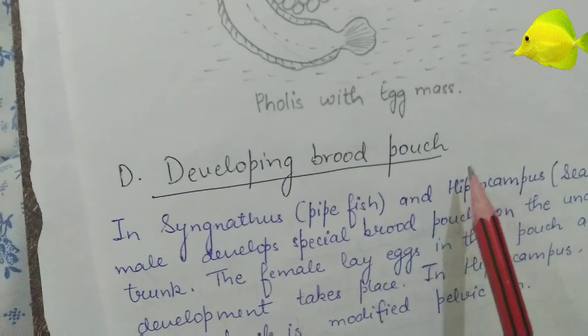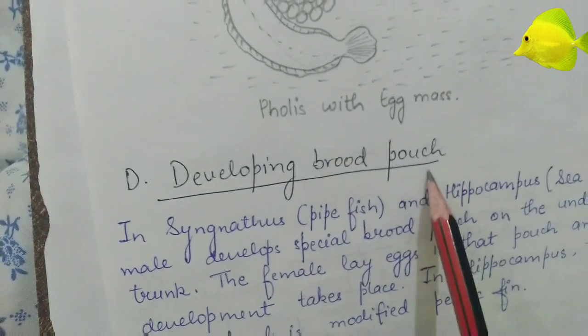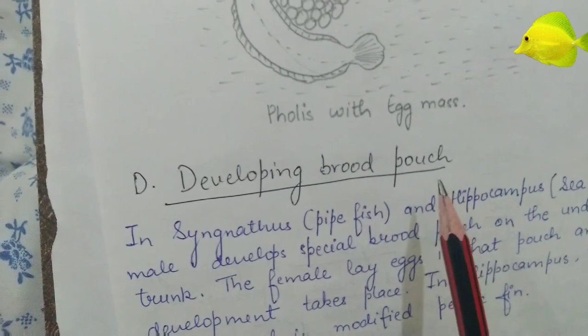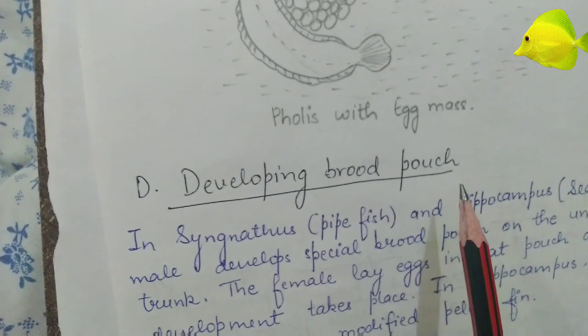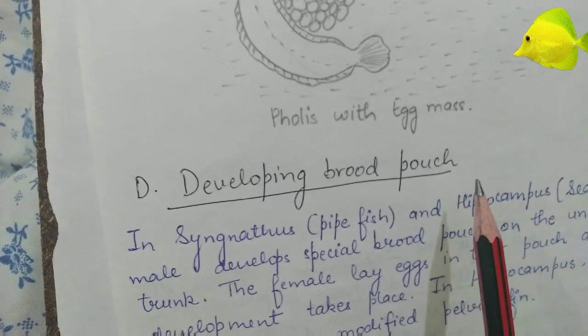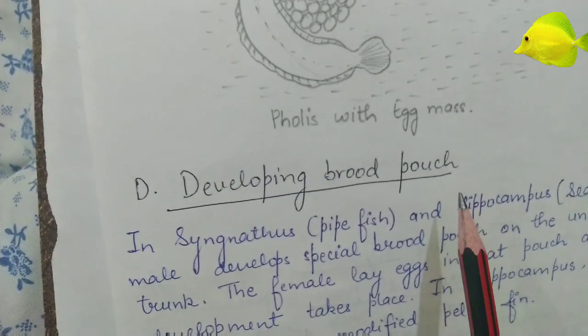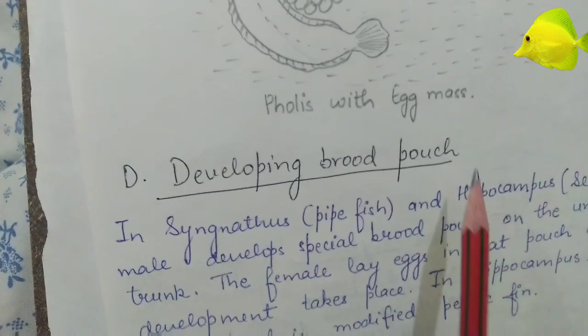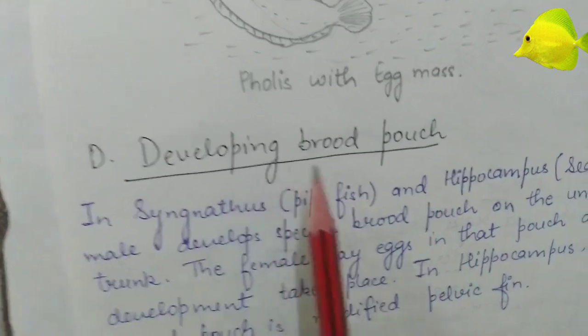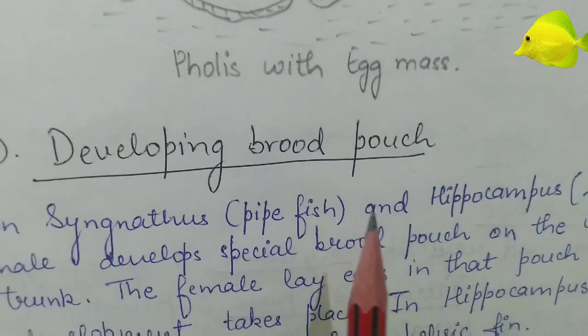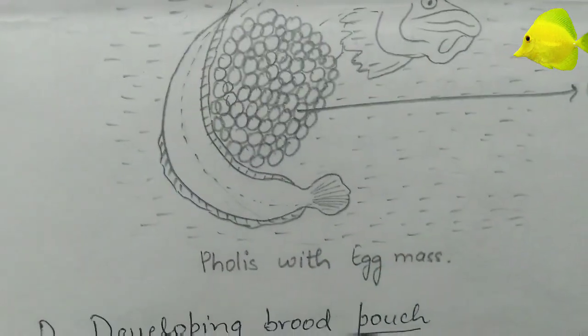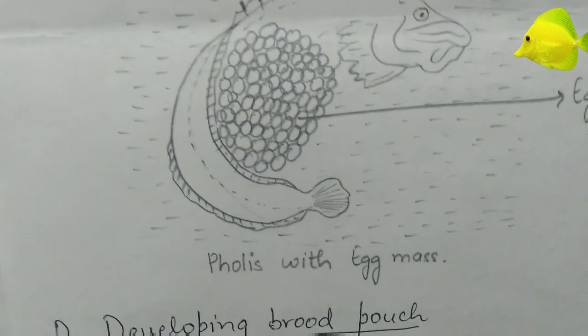So to summarize so far: the first method was the formation of nests studied in the previous video, the second was mouth breeders, the third was coiling around eggs, and the fourth is developing a brood pouch, which is also an important phenomenon.